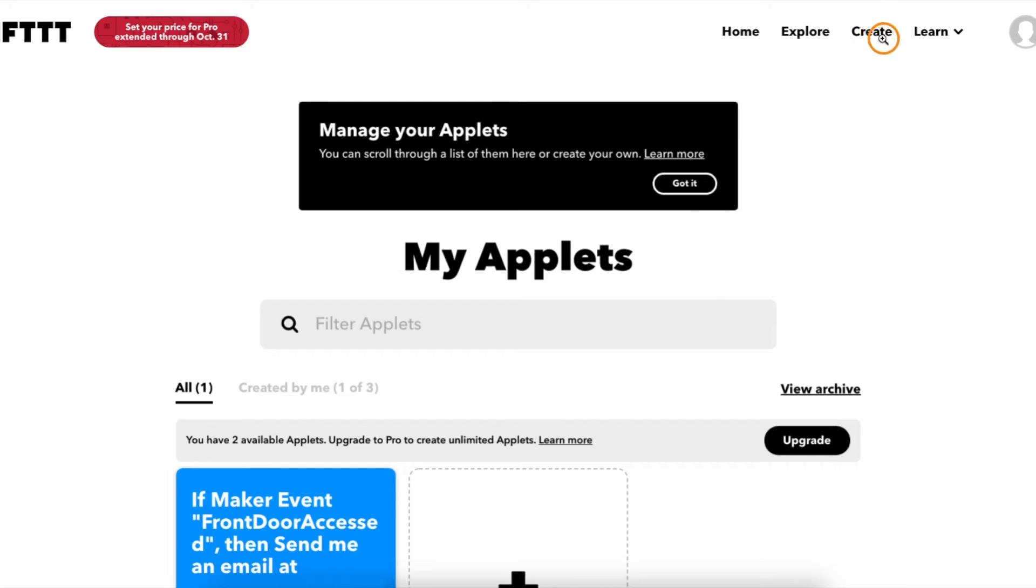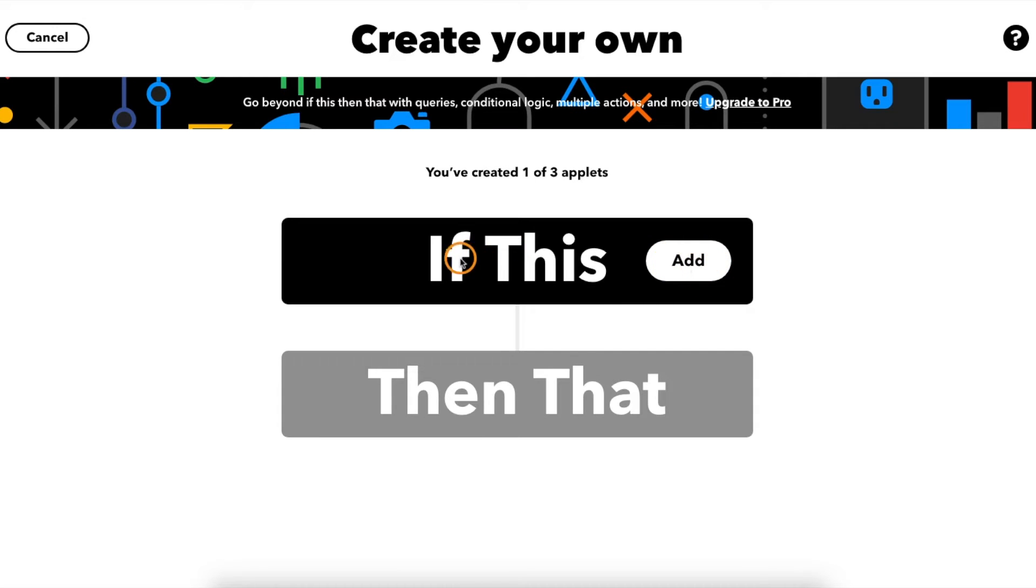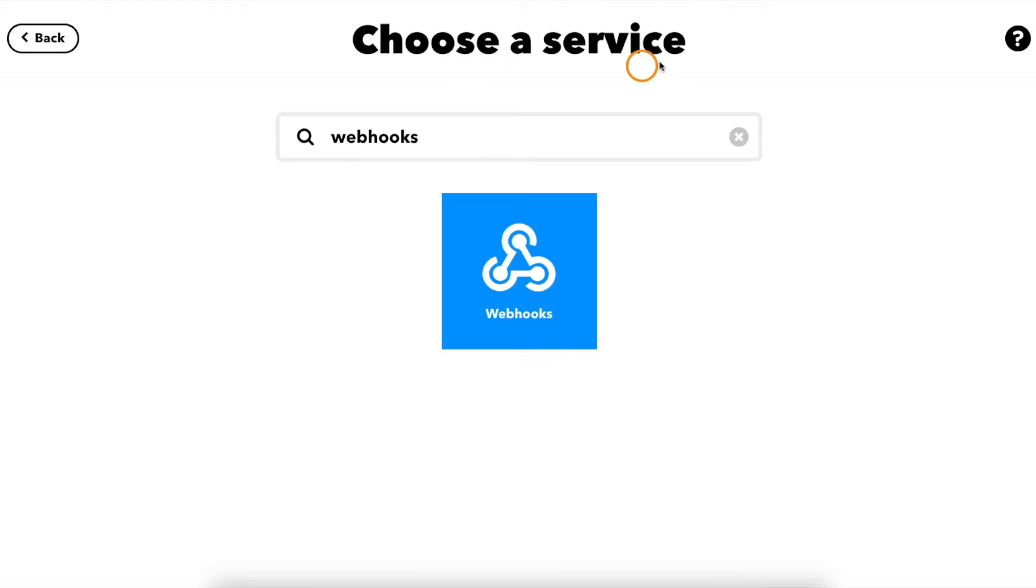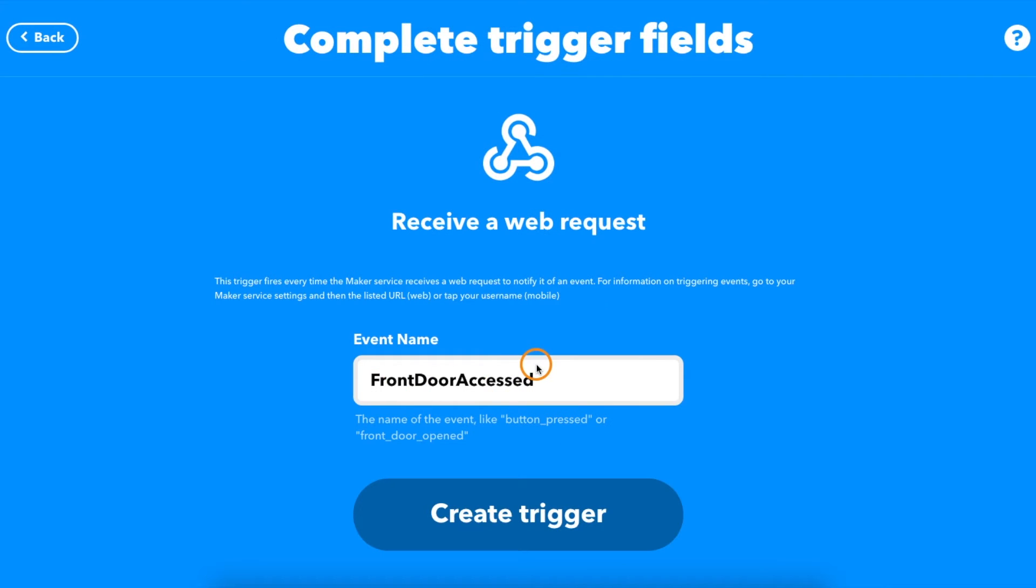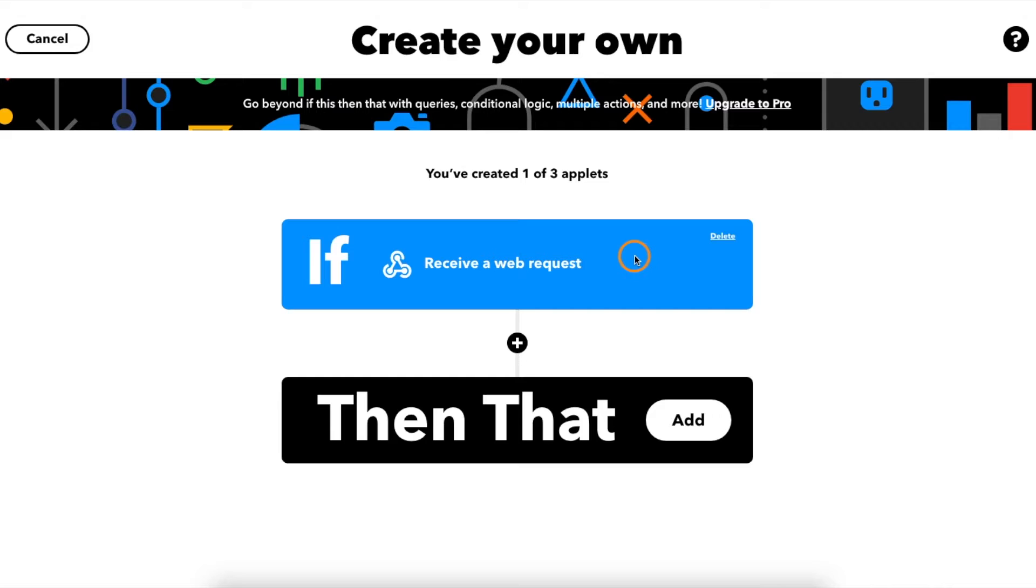So clicking on create, first we add the if condition. We need to choose a service, so type in webhooks and click that. Then click to say that we want to receive a web request. And that means whenever a certain web link is accessed, it will trigger what we are setting up. So we give it a name, and since I'm monitoring my front door, I'm going to call it front door accessed, and create trigger.